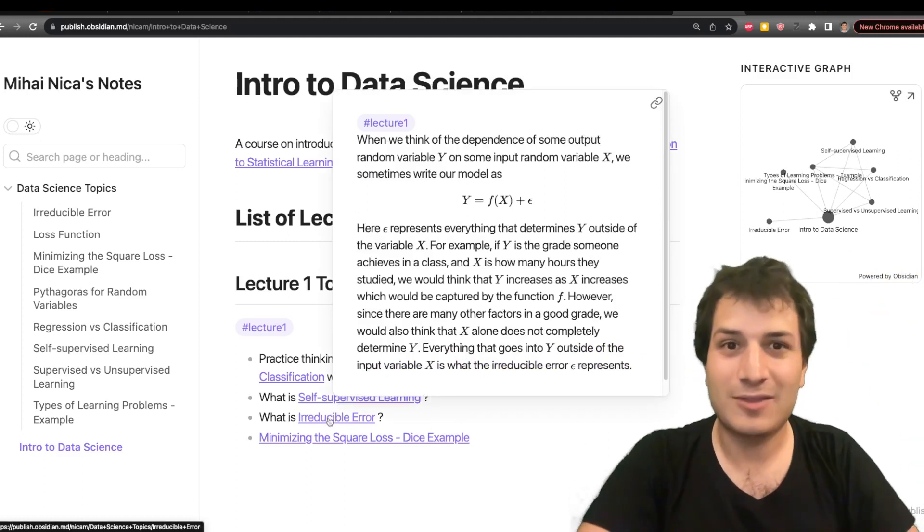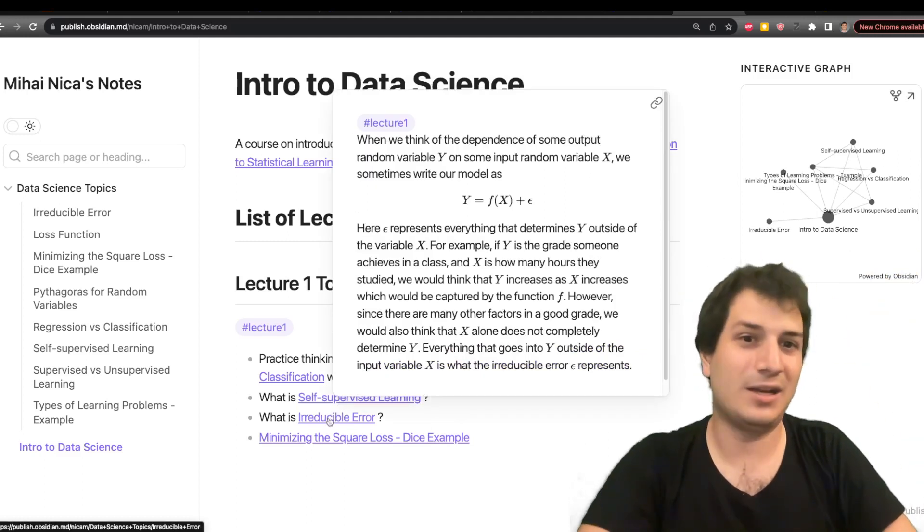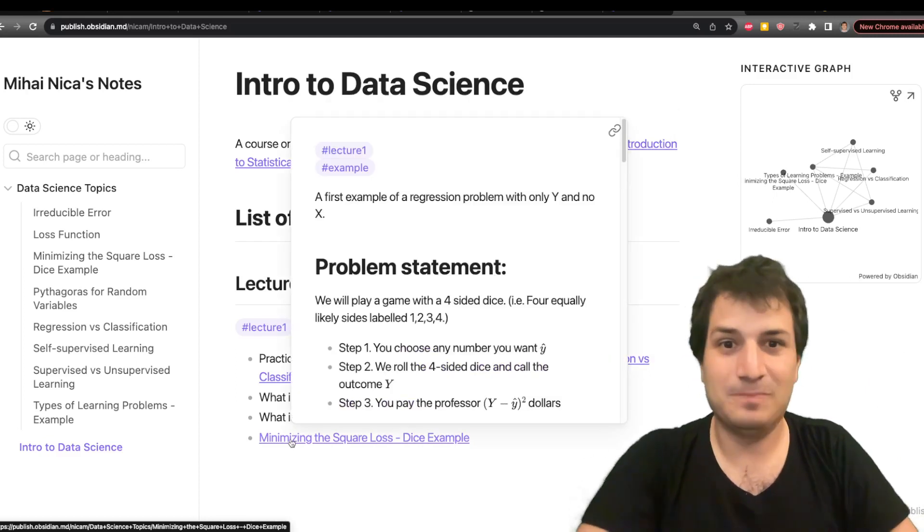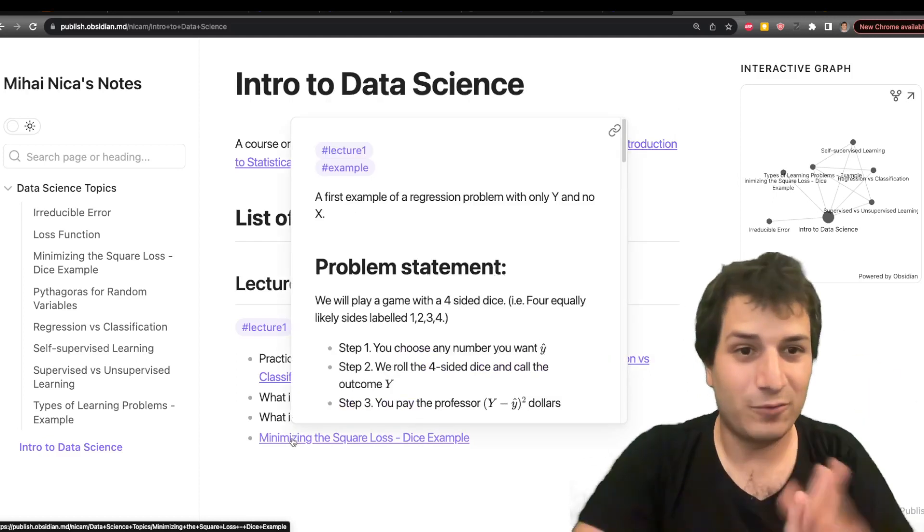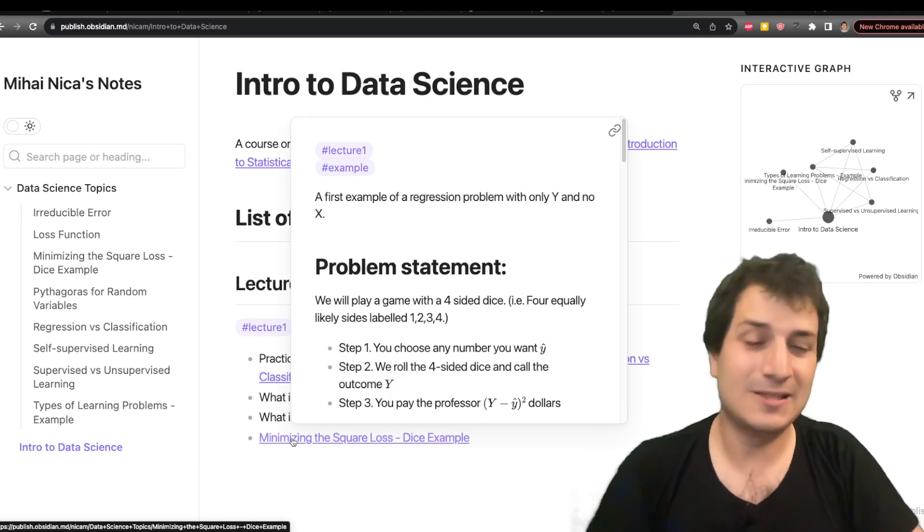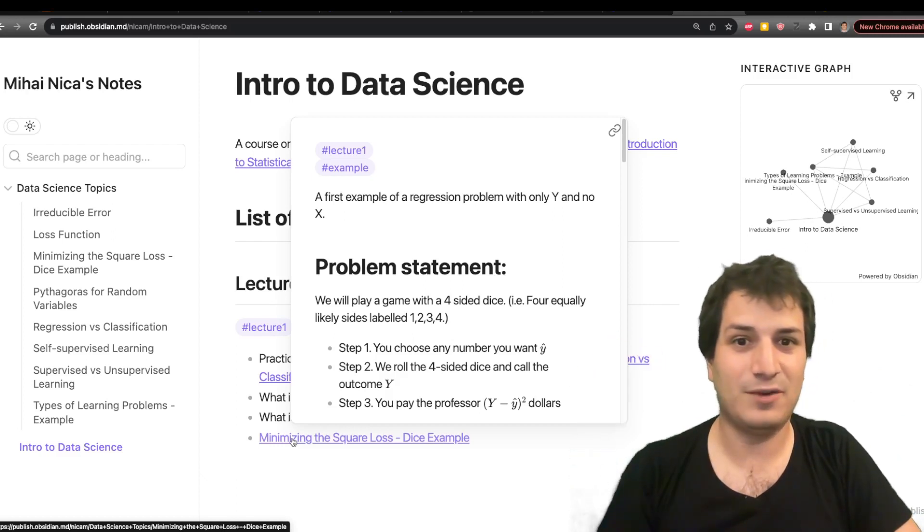We also did an example with irreducible error talking about that. And finally we finished on this dice example where we were rolling a four-sided dice and we tried to minimize the square loss. And so it was this game over here.